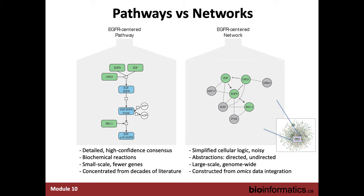What is a pathway and what is a network? Many people working in this area will have different definitions. My definition: when you talk about pathways, you talk about a fairly small-scale system of maybe a few dozen genes, and those genes have well-defined interactions — perhaps a phosphorylation event or a transcriptional deactivation event. Each relationship between the different genes has been defined very carefully in experimental settings. For example, an EGFR-centered pathway with various upstream and downstream members that control EGFR or EGFR-related downstream signaling.